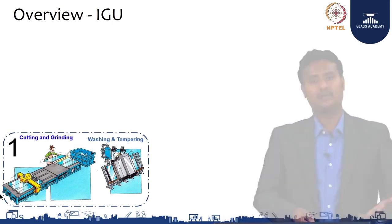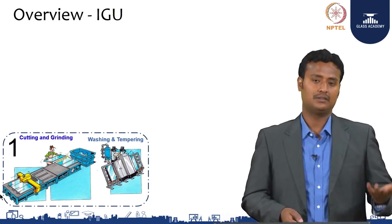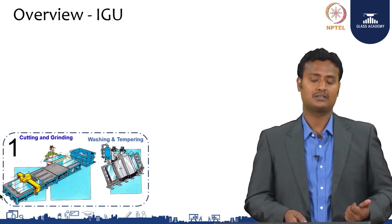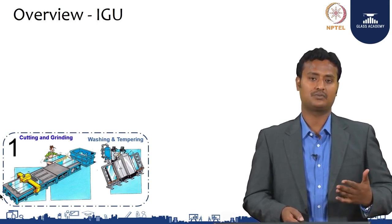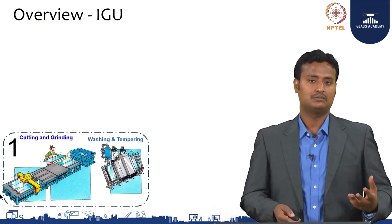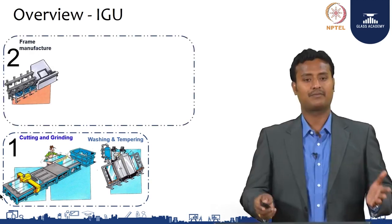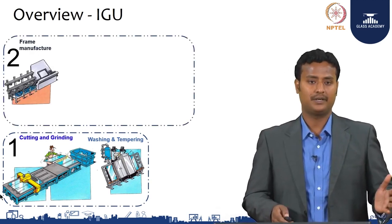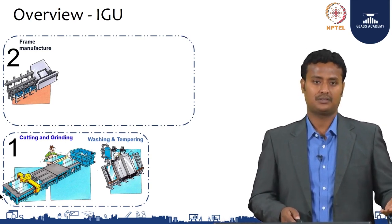Tempering, as you know, increases the strength of the glass from annealed glass to tempered glass — 4 to 5 times the strength. It is a heating process. We have covered the pre-processing and tempering, so let us move on to the IGU process.